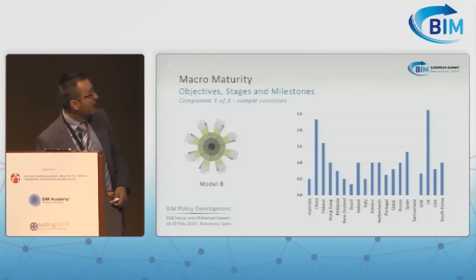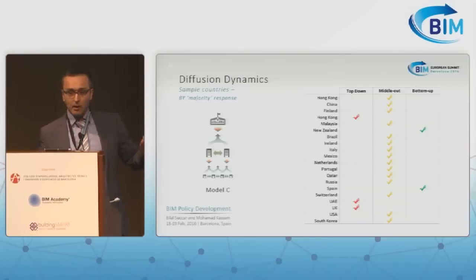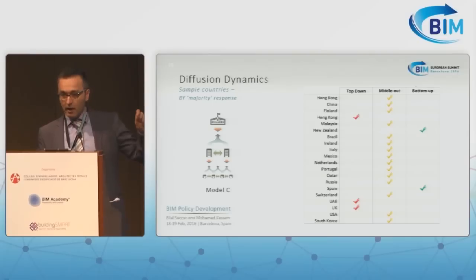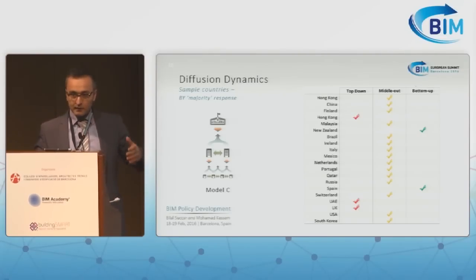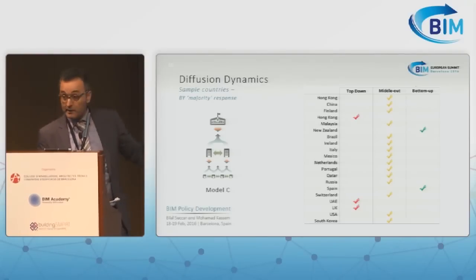The third model covers diffusion dynamics. It's very interesting to see that 65% of the countries we investigated have the middle-out dynamic, where large players diffuse BIM down to the supply chain and upward to policy. Only a few countries are top-down — in this study those are Hong Kong, the UK, and the Emirates.